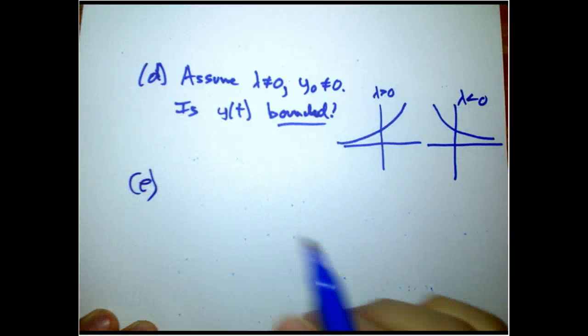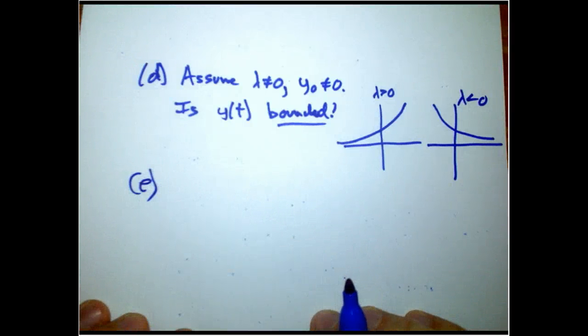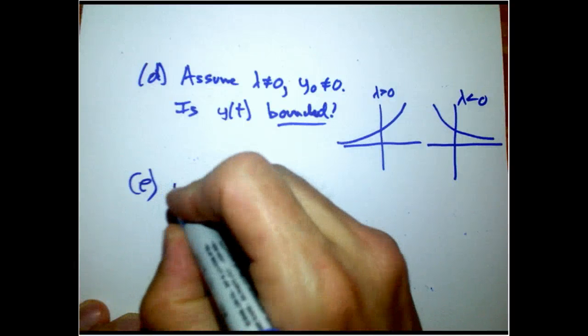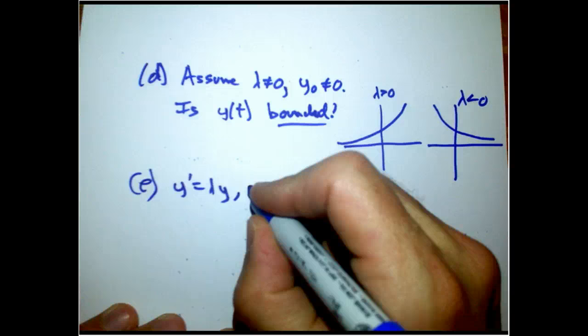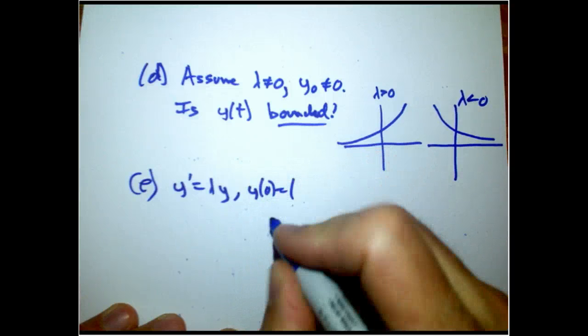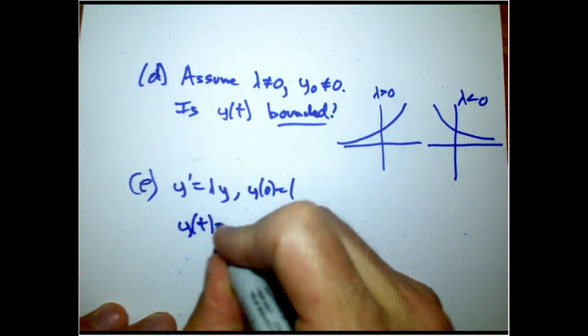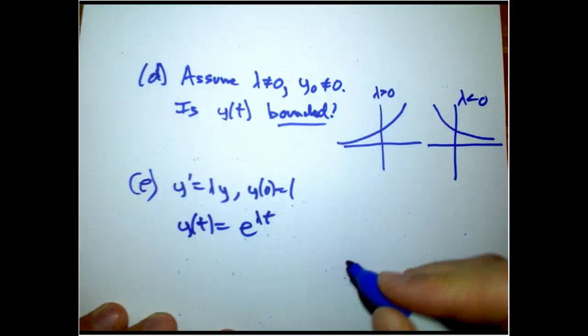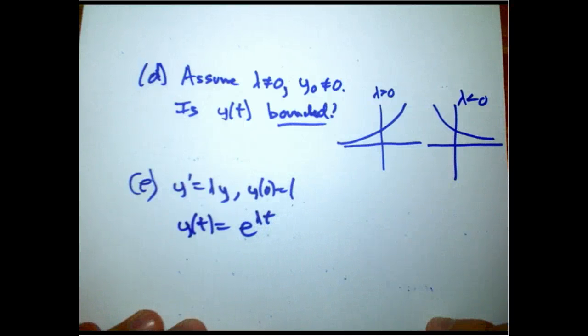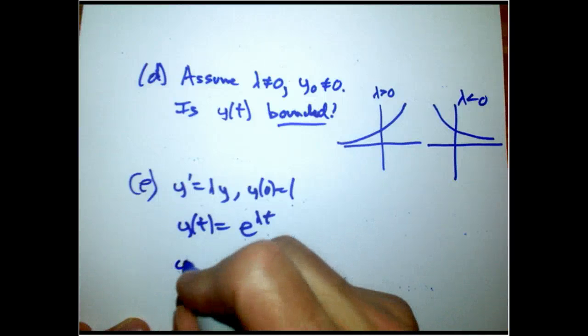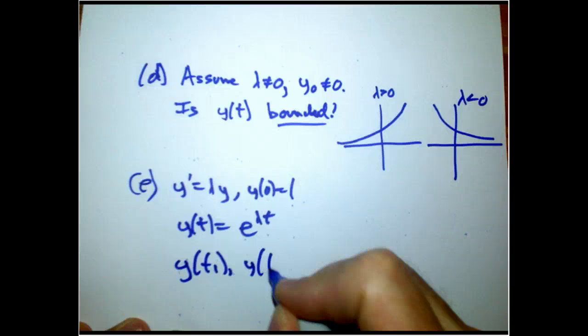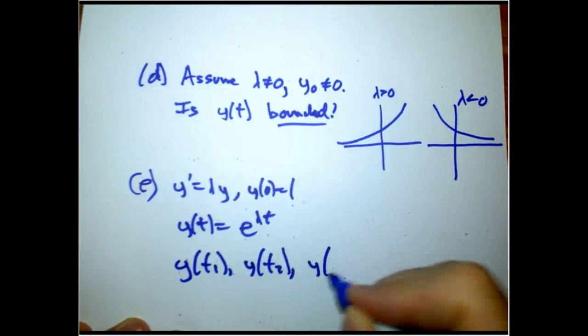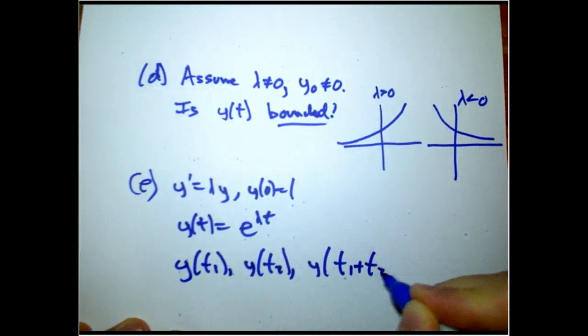And then last bit of this problem is y prime equals lambda y and y of zero equals one, back to our standard problem. So of course y of t equals e to the lambda t, and this just simplifies what I'm going to say. The question is, is there a simple relationship between y at one time, y at another time, and y at the sum of those two times?